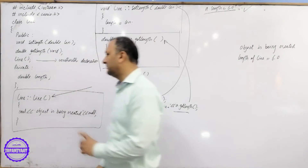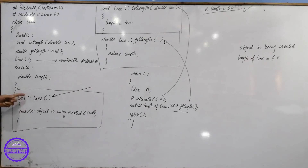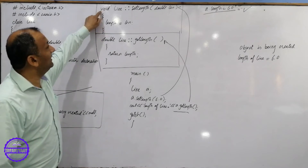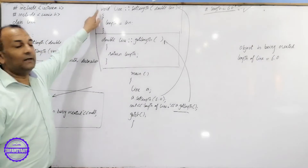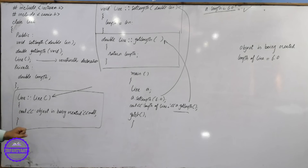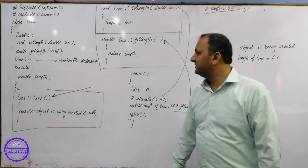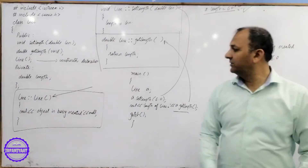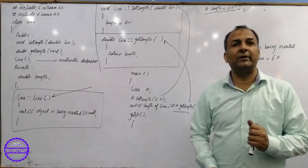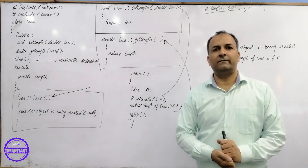You can see where the constructor is defined in the class. The simple thing here is that there is no void, because the constructor does not have a return type. Here you can see void for regular functions, but here there is no void — the constructor does not have a return type. This is the difference. I hope you can understand the difference.